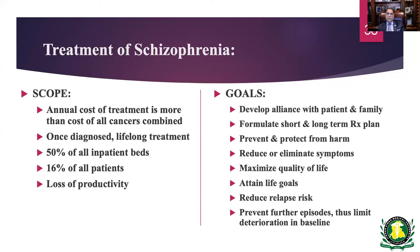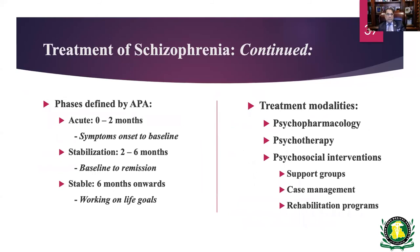Develop a good therapeutic alliance, discuss short and long-term treatment plans, involve the family, protect the patient, and prevent relapse. The idea is to improve quality of life and reduce relapse risk — the more relapses, the worse the prognosis due to the stepladder decline. The American Psychiatric Association divides treatment into acute phase, stabilization phase, and stable phase: symptom onset to baseline is about two months, baseline to remission is six months, then they work on life goals. We use psychopharmacology, psychotherapy, and psychosocial interventions such as support groups, case management, and rehabilitation.